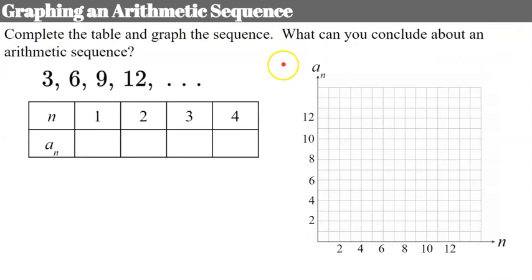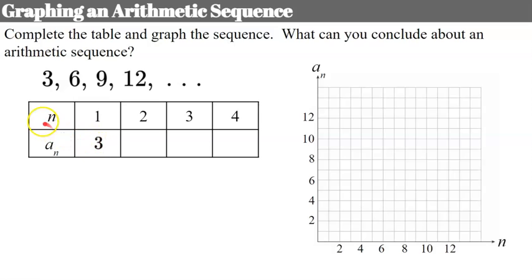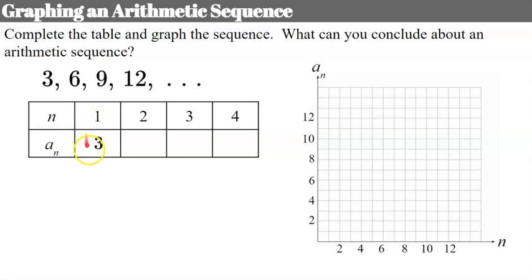Now we're going to graph an arithmetic sequence to determine what kind of function it is. We'll complete a table, graph the sequence, and then draw a conclusion. The term number n goes in the table as our input. Term 1 has a value of 3, which we plot as the ordered pair (1, 3). I've labeled the x-axis n for term number and the y-axis a subscript n for the value of that term.